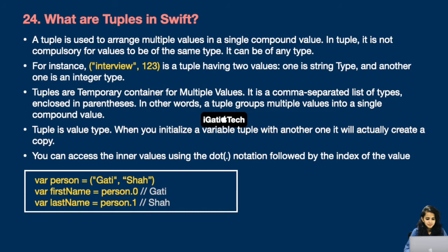Next question: What are tuples in Swift? A tuple is used to arrange multiple values in a single compound value. In a tuple, values do not need to be of the same type — it can be any type. For instance, we can combine a String and an Integer as a compound value. Tuples are temporary containers for multiple values — a comma-separated list of types enclosed in parentheses. Tuple is a value type, so initializing one from another creates a copy. You can access inner values using dot notation followed by the index.